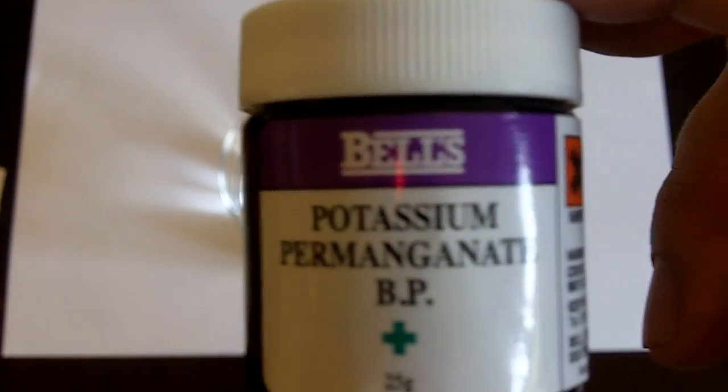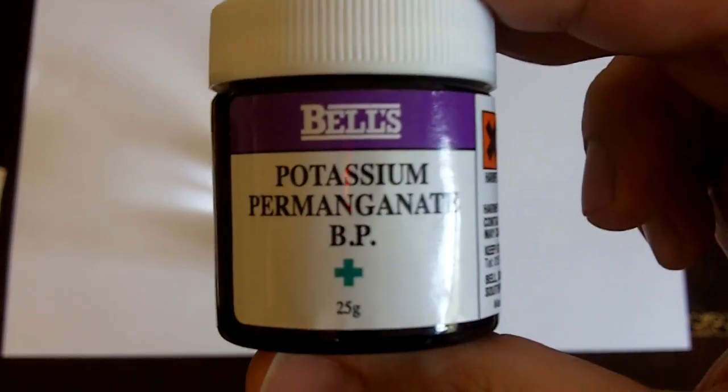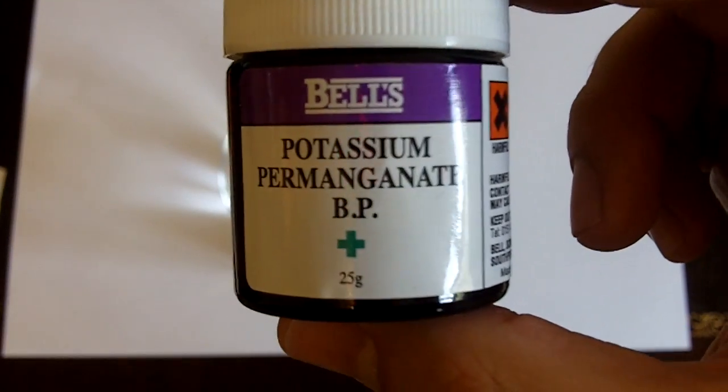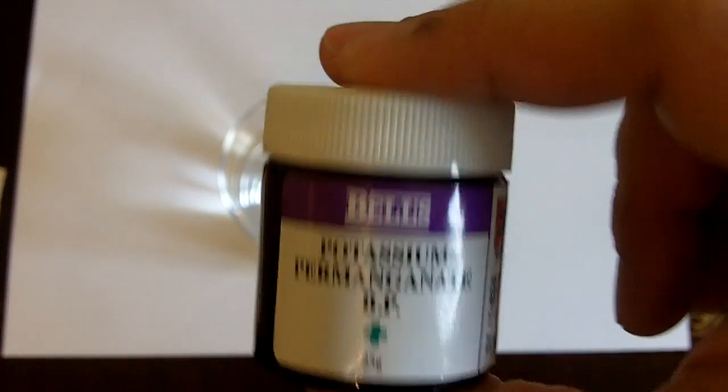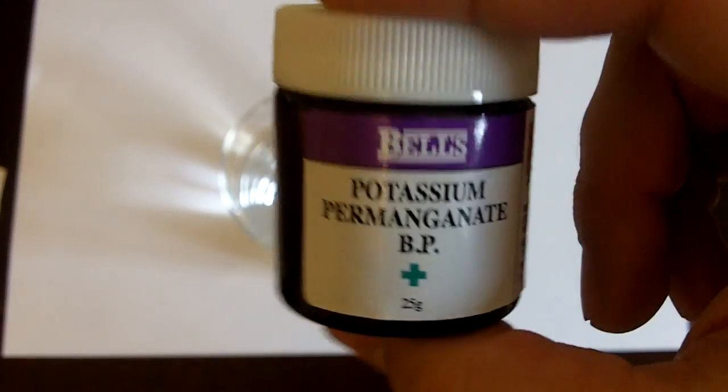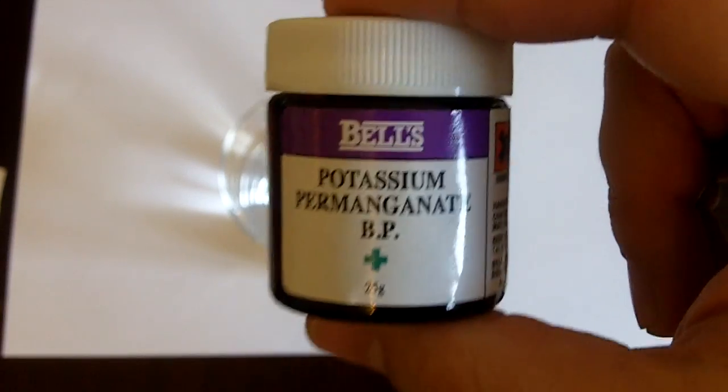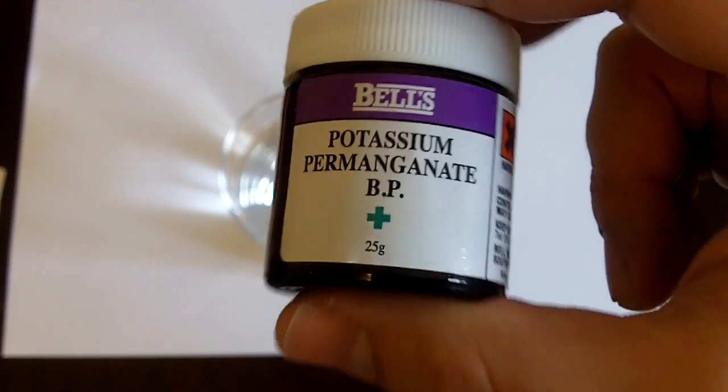Hi guys, this is Fernando doing another video for the Mono Survivalist. Today I'm going to be talking a little bit about potassium permanganate, which is this little flask that you see here. Potassium permanganate is a chemical compound, actually a salt, that you will sometimes find in some of the more specialized survival kits.